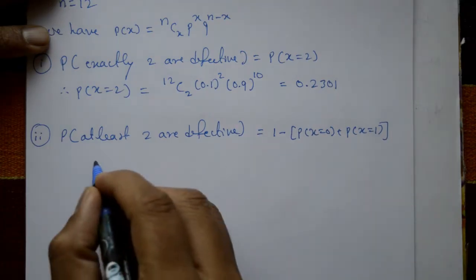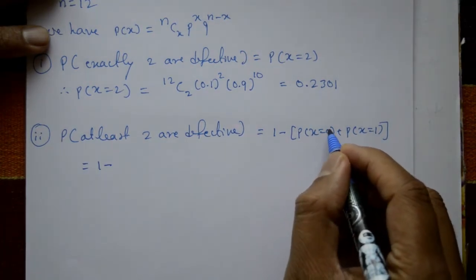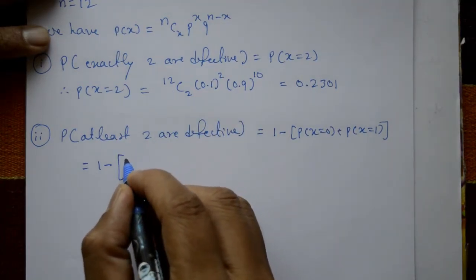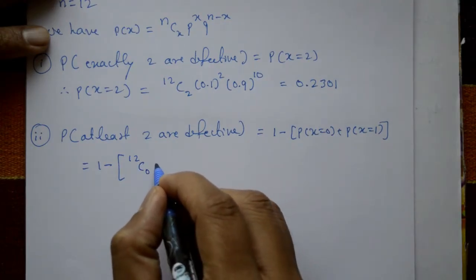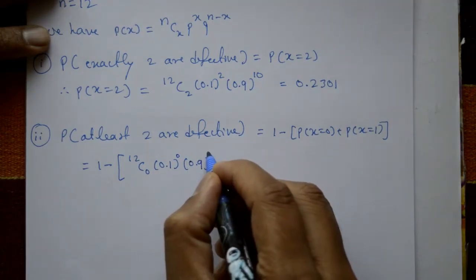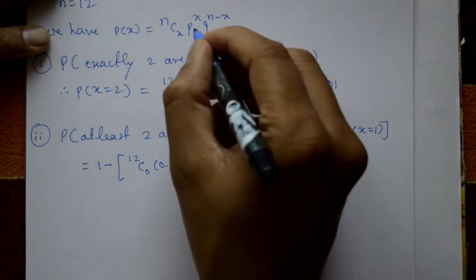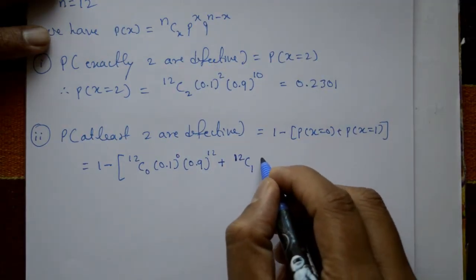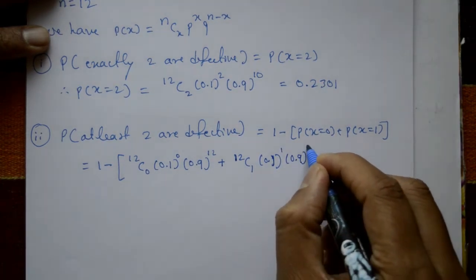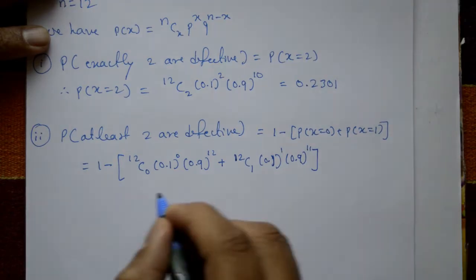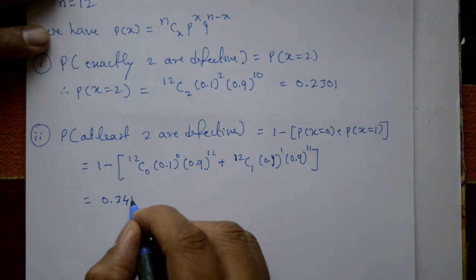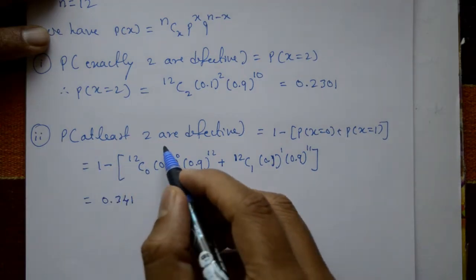So the probability of at least two defective = 1 − [P(X=0) + P(X=1)] = 1 − [12C0 × (0.1)^0 × (0.9)^12 + 12C1 × (0.1)^1 × (0.9)^11]. Using a calculator, you get 0.341.